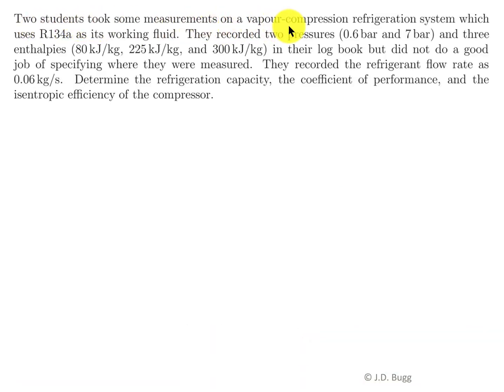Two students took some measurements on a vapor compression refrigeration system which uses R134A as its working fluid. They recorded two pressures, 0.6 bar and 7 bar, and three enthalpies in their logbook, but did not do a good job of specifying where they were measured. They recorded the refrigerant flow rate as 0.06 kilograms per second. Determine the refrigeration capacity, the coefficient of performance, and the isentropic efficiency of the compressor.